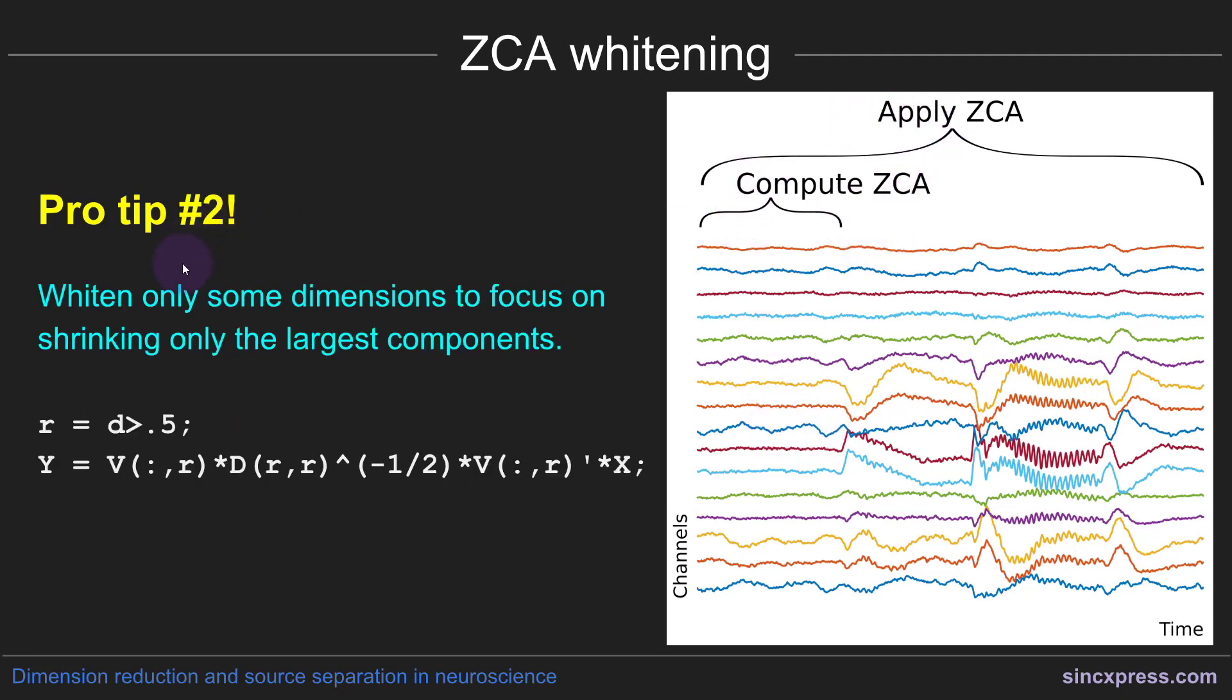A second tip is that you don't need to apply the entire eigenvectors and eigenvalues matrix when applying ZCA. You can actually selectively shrink only the largest components. So you could do something like this. You define some threshold. For example, it can be any of the eigenvalues that account for more than 0.5% of the variance. Or maybe you want to set this really high so that it's only suppressing a couple of main directions. Maybe you even just take the top three components here.